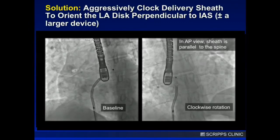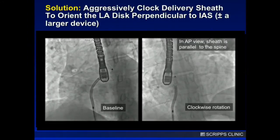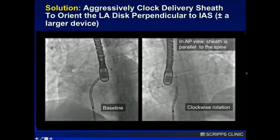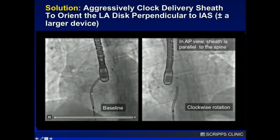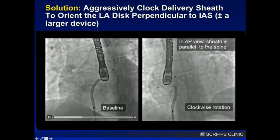The basic fundamental concept to overcome this, which works 9 out of 10 times, is to aggressively clock the delivery sheath so that it brings the left atrial disc orthogonal to the septum. A good rule of thumb on fluoroscopy is when the sheath is parallel to the spine in the straight AP projection. You can see the normal conformation of the delivery sheath — just a standard torque view, 45-degree sheath.